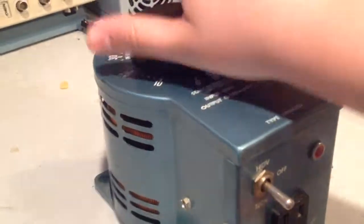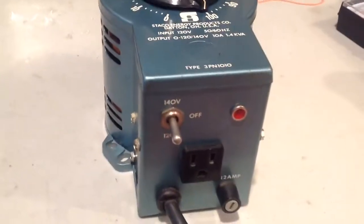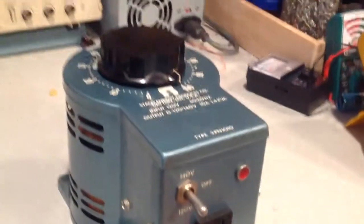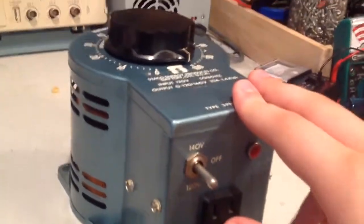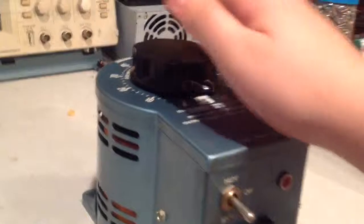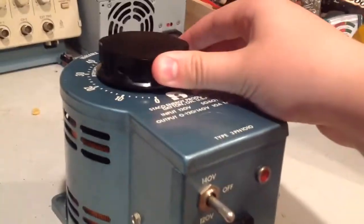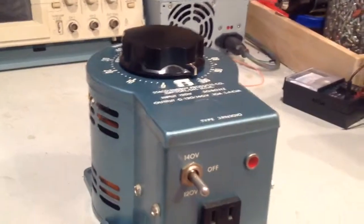A Variac is known as a variable transformer, as you can see. This is what they used to do with light bulbs for lights and shows and stuff. They used to be the auto transformer, it would be automatic. You push a button, you could dim the lights slightly, and I'll show you that in a second.